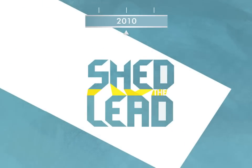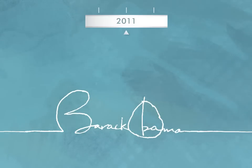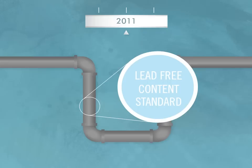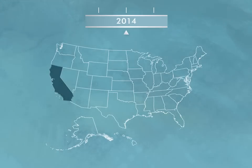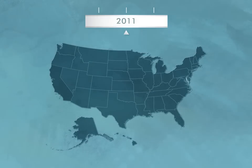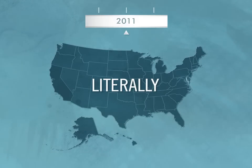The effort to shed the lead gains momentum. On January 4th, 2011, President Obama signs the Reduction of Lead in Drinking Water Act, which redefines the lead-free content standard for plumbing fixtures in the Safe Drinking Water Act. So in 2014, what was law in California became law everywhere. Changes are in the pipeline again — literally.